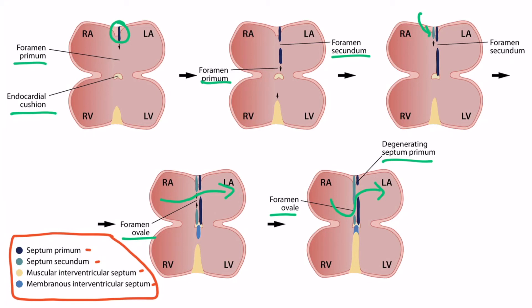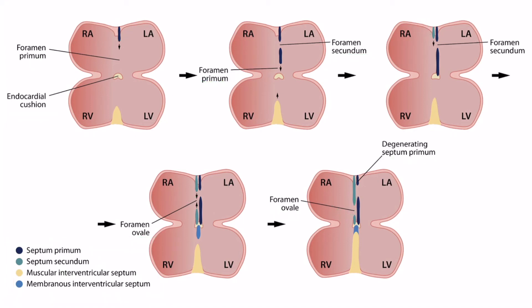That's formation of the atrial septum. Now let's discuss the interventricular septum. The muscular portion of the interventricular septum develops from the bottom part of the heart and grows upward towards the endocardial cushion. This growth continues and then stops about two-thirds of the way there. At this point, the membranous portion of the interventricular septum begins to grow downward from the endocardial cushion. Eventually, the two cushions fuse, forming a solid septum between the two ventricles.